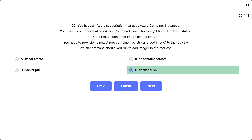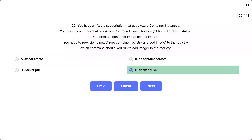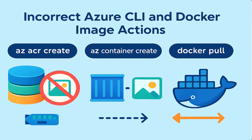Docker push uploads your locally tagged container image to the specified Azure container registry. After logging into the registry and tagging the image with the registry's login server name, running docker push registry.azurecr.io/image1:v1 transfers the layers so the image is stored in Azure and ready for deployment. Why the other options are incorrect: az acr create creates a new registry — it does not transfer images. az container create launches a running container instance — it doesn't move images into a registry. Docker pull downloads an image from a registry to your local machine, the opposite direction of what we need.